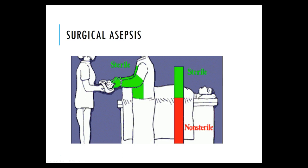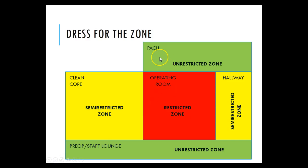Regarding surgical asepsis in the OR, from the waist up is sterile and from the waist down is non-sterile. Never turn your back to a sterile field — anything behind you should be considered non-sterile. Different areas of the operating room require different attire: green zones allow normal clothing; semi-restrictive zones require scrubs and a bonnet but not a mask; the restricted zone (the OR itself) requires scrubs, mask, eye protection, and a head covering.